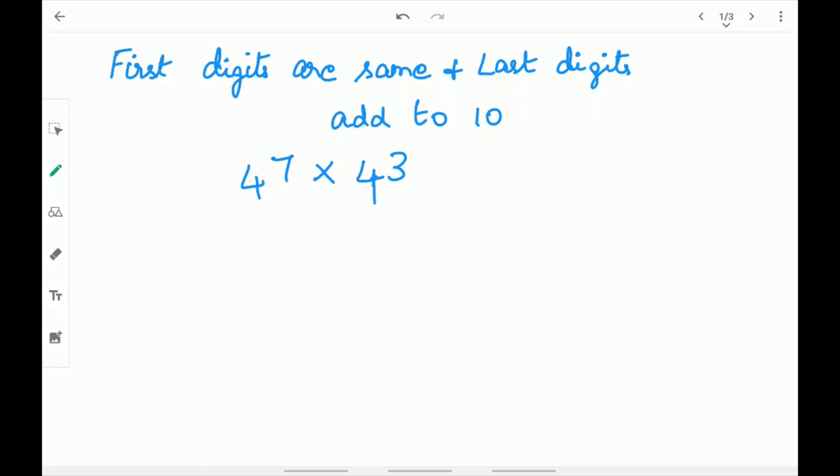Let's use 47 times 43 as our example. In this example, the first digits are the same and the last digits add up to 10.